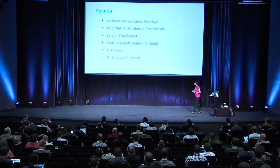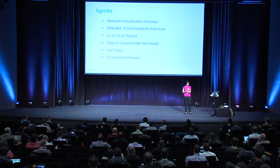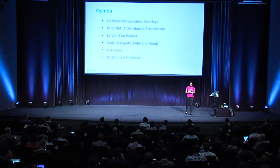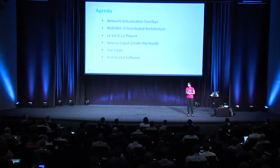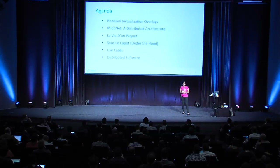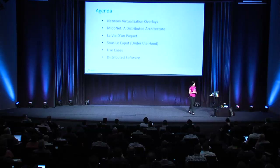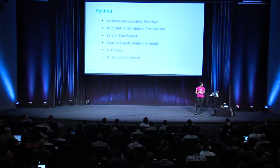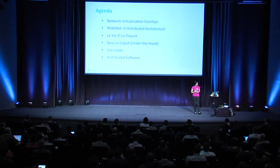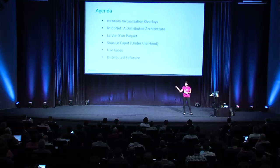I have an ambitious amount of material, so I'll just try to run through it, and then we can do questions and answers at the end. We'll start with an introduction to set the groundwork on network virtualization overlays. Then I'll talk about MitoNet as an example of a distributed architecture and some of the benefits of using a distributed architecture. Then we'll go into La Vie de Paquettes — the life of a packet as it goes through an OpenStack and MitoNet environment.